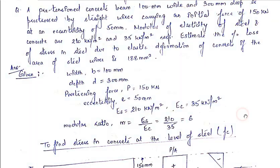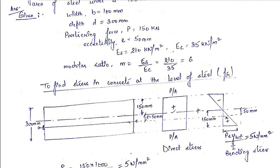Now we will find fc, the stress in concrete at the level of steel. The pre-stressed beam has a tendon provided at an eccentricity of 50 mm. For a rectangular cross-section, the neutral axis passes at the mid-depth of the beam. Since the total depth is 300 mm, the neutral axis is at 150 mm. The tendon is located 50 mm below the neutral axis, so we need to find the stress at that level.